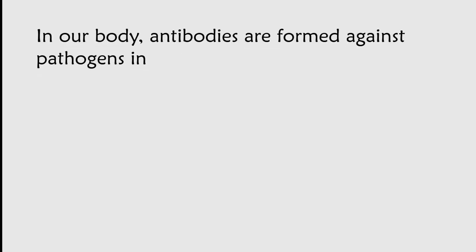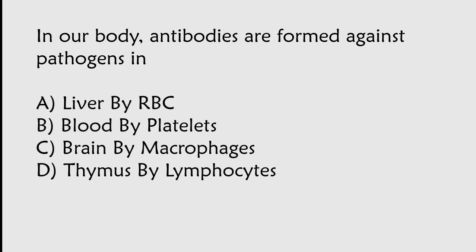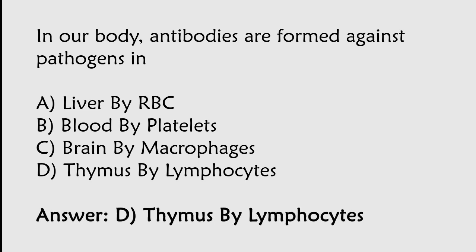In our body, antibodies are formed against pathogens in: liver by RBCs, blood by platelets, brain by macrophages, thymus by lymphocytes. The correct answer is Option D. Antibodies are formed against pathogens in the thymus by lymphocytes.